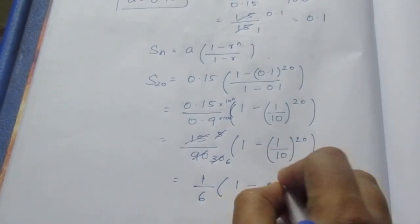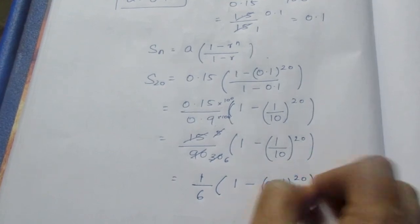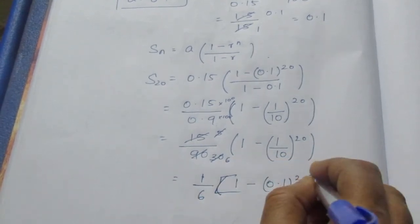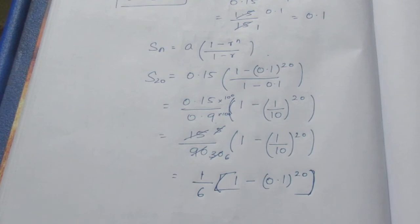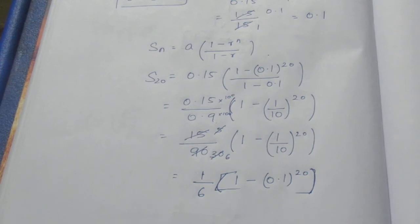1 minus 0.1, the whole to the power 20. So we can leave this as 1 minus 0.1 to the power 20, because 1 by 10 to the power 20 will be a very big number. Instead of solving, we can leave this. For bigger numbers, we can leave the sum as it is.